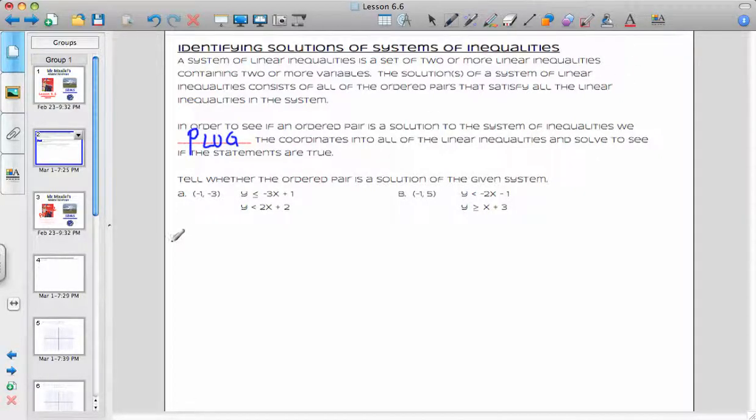So let's take a look at example A, same one that you have on your note-taking sheet, and the first thing we have to do is make negative 3 less than or equal to negative 3 times negative 1 plus 1. And we're going to solve this step by step. So negative 3 times negative 1 is positive 3. 3 plus 1 is equal to 4. And we want to see if this statement is true.